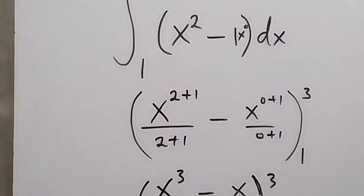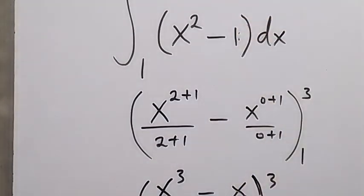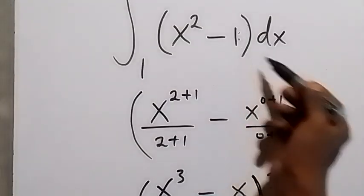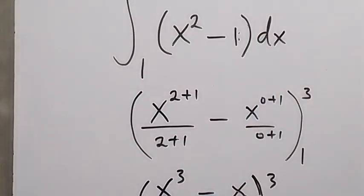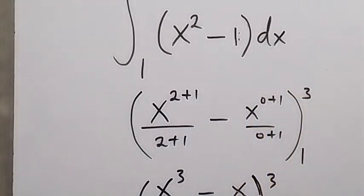Now from here we should understand that anytime we are integrating a constant, be it 1, 2, 3, 4, and so on, it will just be that constant times the variable we are integrating with respect to. So here we have 1, and 1 times x is just x.